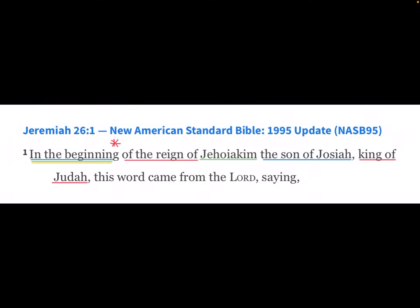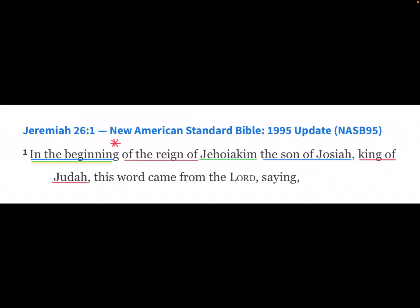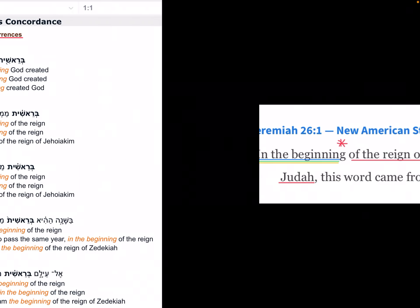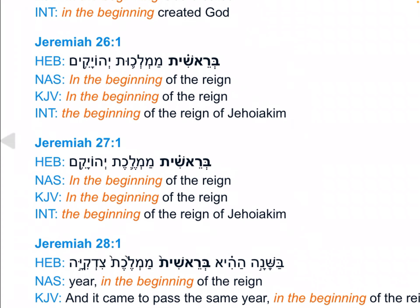When we take a quick look at it: Jeremiah 26:1 tells us, 'In the beginning of the reign of Jehoiakim the son of Josiah, king of Judah' — the Rashit, the Barashit, the Archei in the Greek Septuagint. And as we're talking about context, it's the beginning of a son and his role as king over the kingdom — another kingdom beginning. In fact, when we look at all the Jeremiah references, it's all the same.